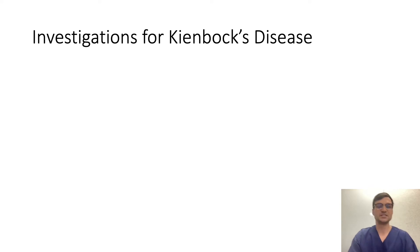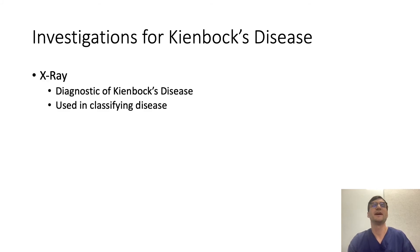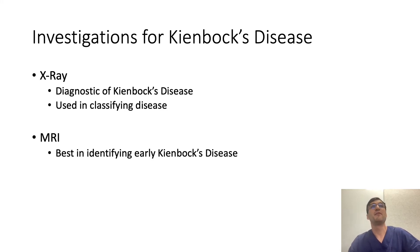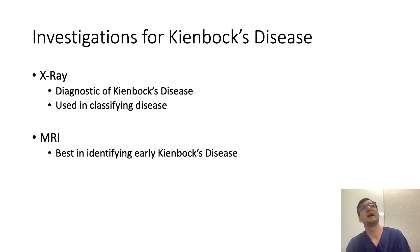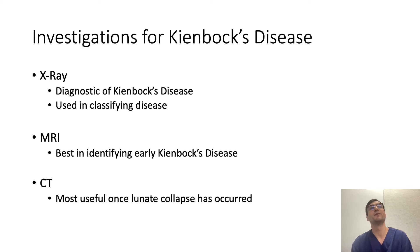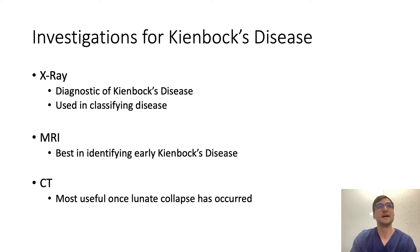If we are suspecting Kienböck's disease, we use imaging to investigate it. The gold standard imaging is X-ray, which is diagnostic and also used to classify the disease. MRI can be useful particularly in the early stages, because it can identify early Kienböck's before it can be seen on X-ray. In the later stages, once the lunate has collapsed and there is displacement of the other carpal bones, CT can be useful to look at the extent to which these bones have collapsed.